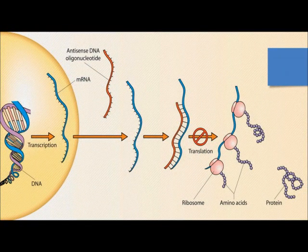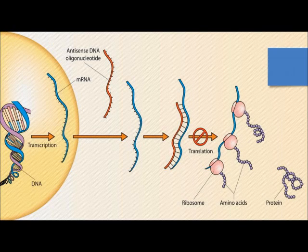Inside each cell, the drug binds to the targeted messenger RNA that is responsible for making the disease-causing proteins. The binding process causes the mRNA to be broken down, which prevents the production of the disease-causing protein. Each antisense drug is different and only interacts with one targeted mRNA.